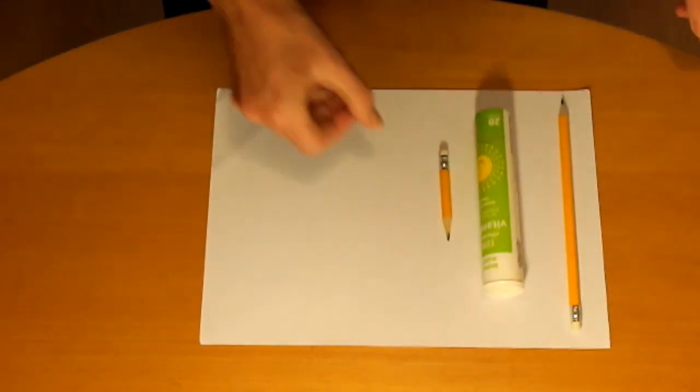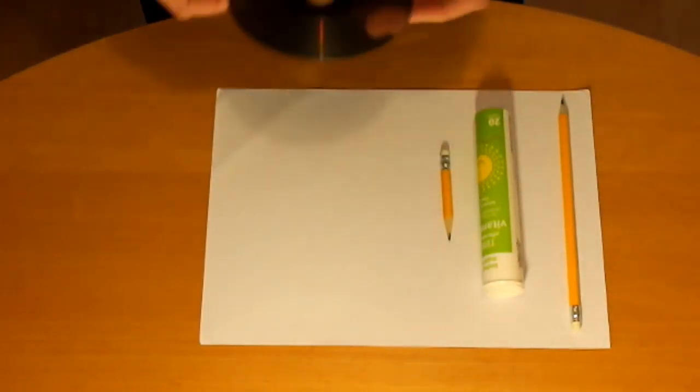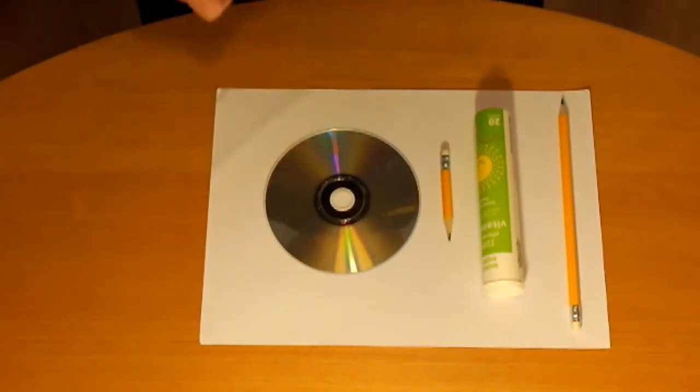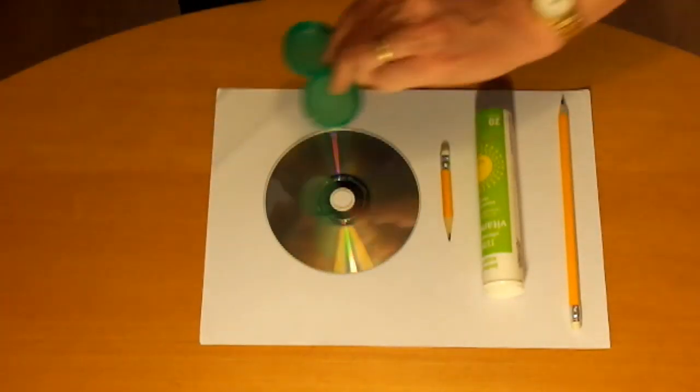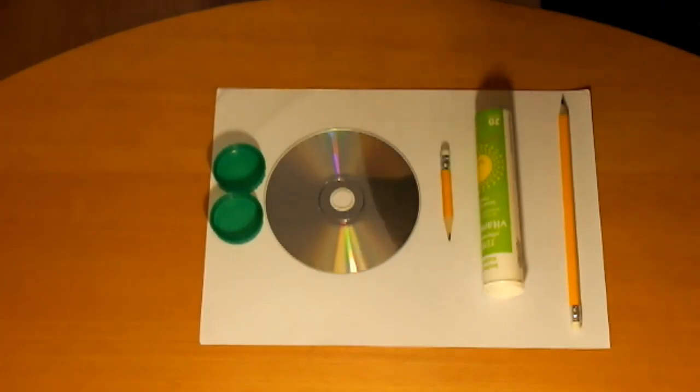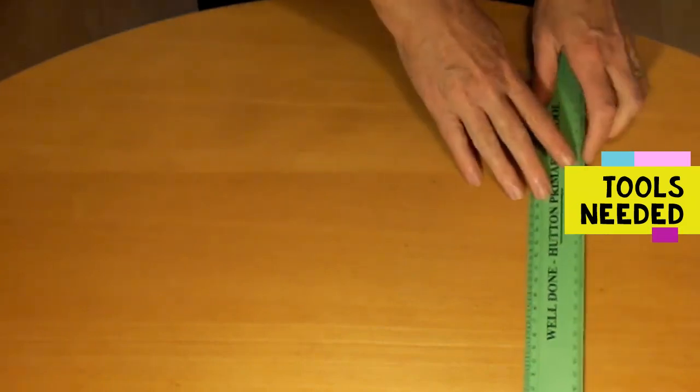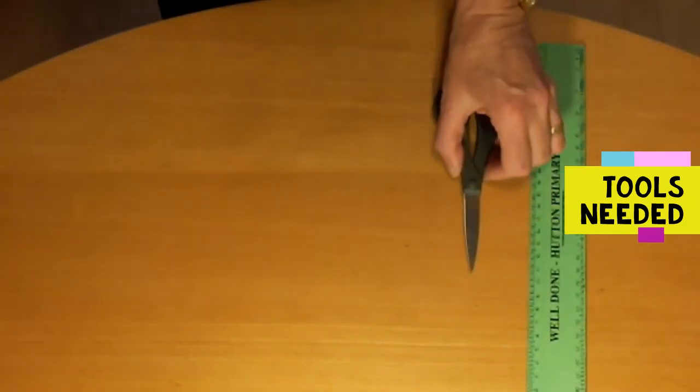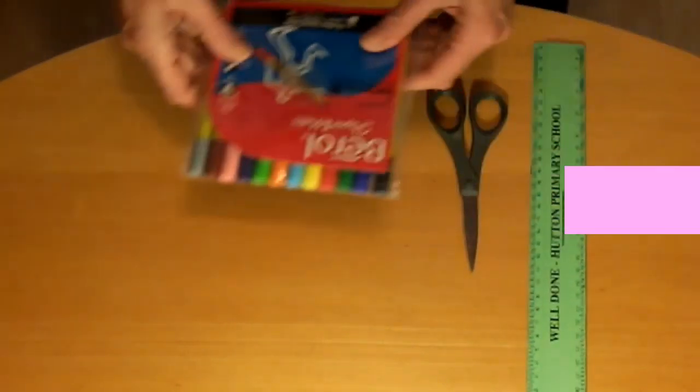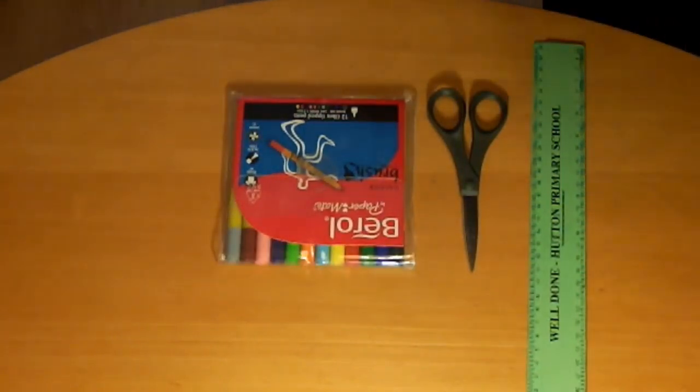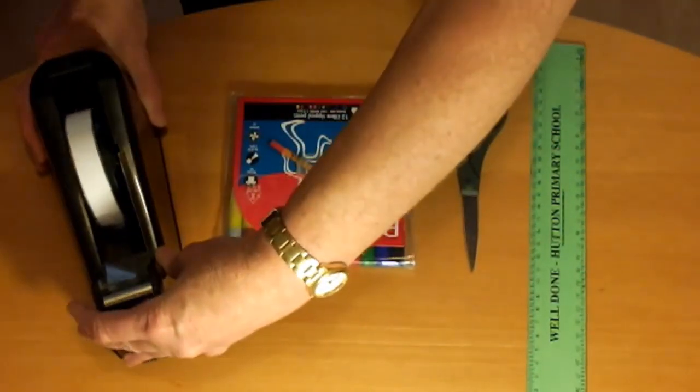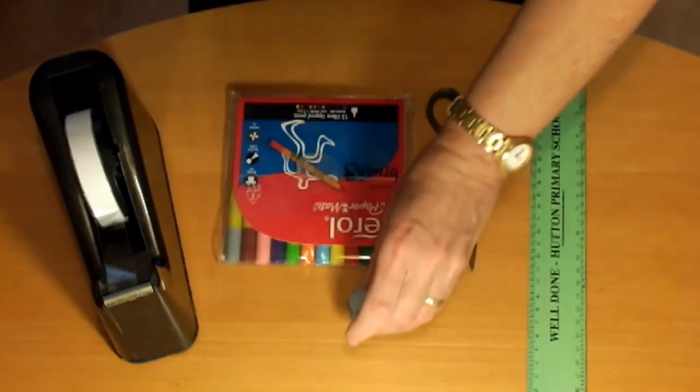A shorter pencil, an old CD or DVD, two milk bottle lids, and some string. And you'll need a ruler, scissors, felt tip pens, sellotape and some blue tack.